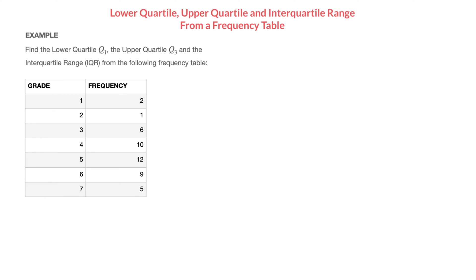In this video we learn how to find the lower quartile, upper quartile, and interquartile range from a frequency table. To do that we're going to work through the example we see here, in which we're told to find the lower quartile Q1, the upper quartile Q3, and the interquartile range IQR from the following frequency table.